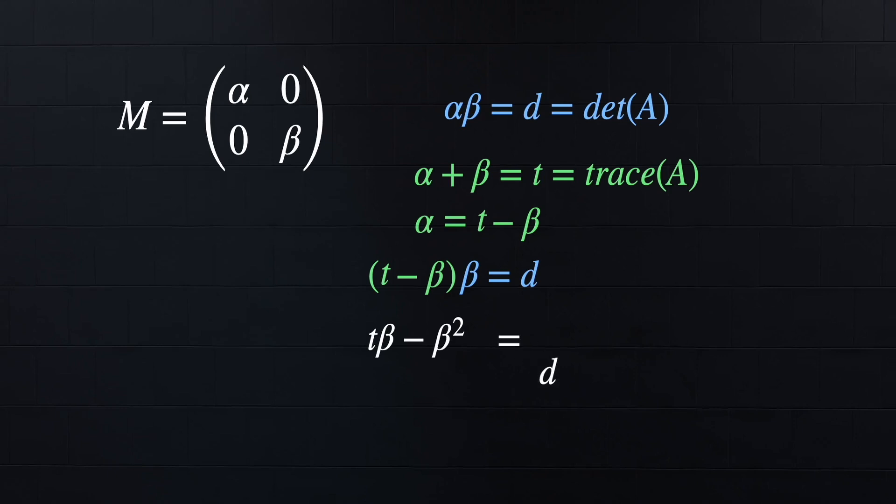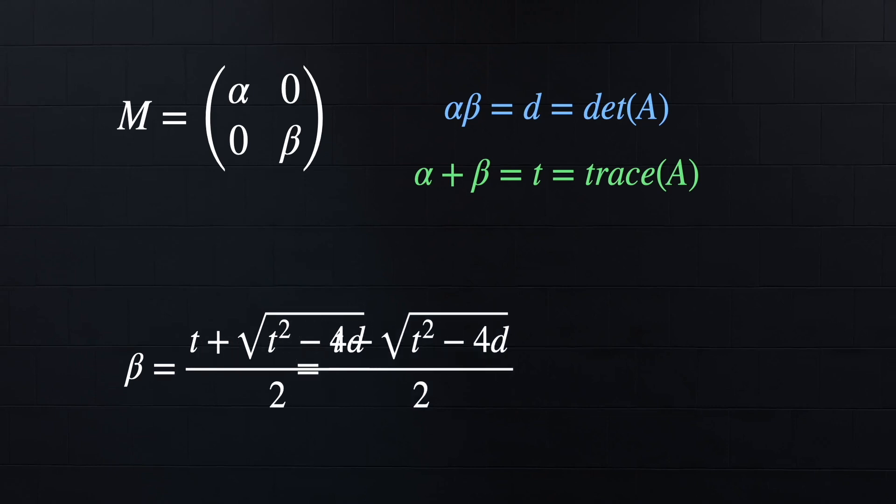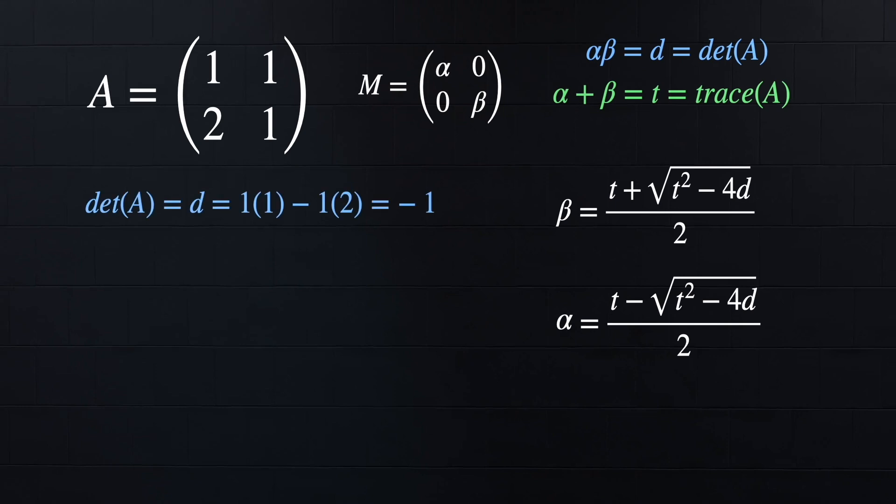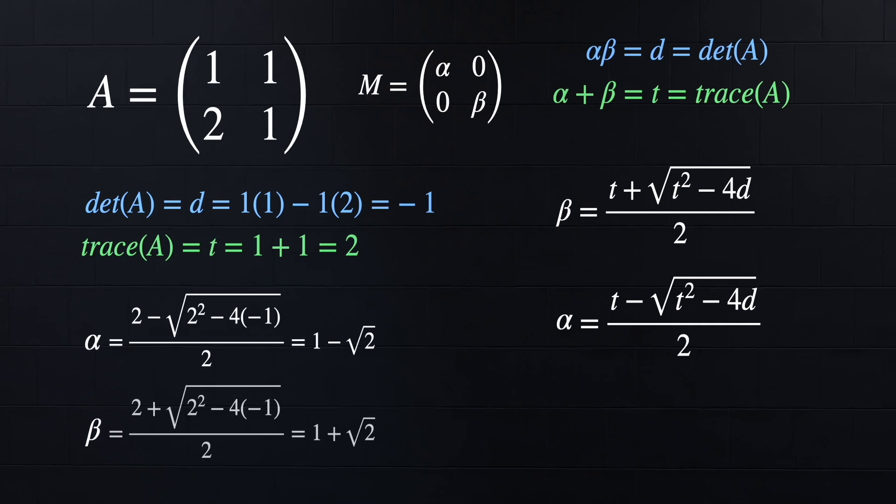Now we can plug it into the first one to get (t - beta) times beta equals d. Now let's distribute the beta and then subtract d over to the other side. From here, we can use the quadratic formula to find beta. And if we say beta uses the plus sign, then alpha will just use the negative. Now back to our example matrix A. First, we will find the determinant, which equals -1, and the trace equals 2. Now we can just plug in our values for alpha and beta, and we get that the eigenvalues equal 1 minus the square root of 2, and 1 plus the square root of 2.